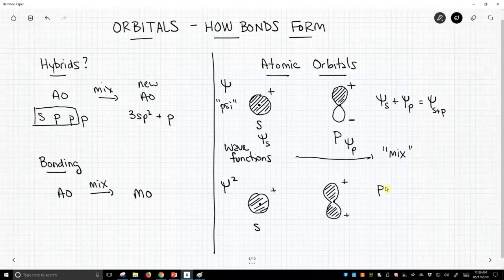Psi squared gets us into what we call the probability function. The probability function. And this is really about when we ask questions, what is the shape of the molecule? We look at the probability function. Where is the electron? That's a probability function type question.